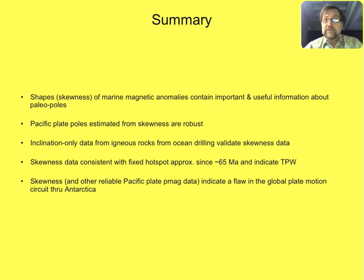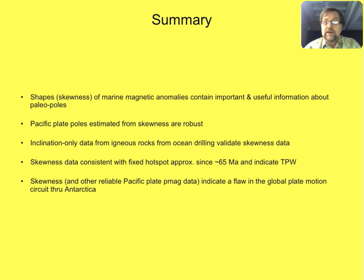Since the hotspots have moved relative to the spin axis, this probably indicates some true polar wander. Also, when we use the paleomagnetic data to test the global plate motion circuit — the one that would relate the Atlantic-bordering continents to the Pacific plate, for example North America to Nubia to Antarctica around to the Pacific plate — we find there must be some kind of flaw in the circuit that goes through Antarctica, most likely due to unmodeled plate motion within Antarctica.